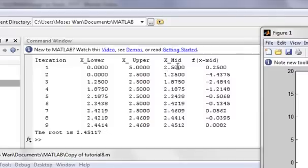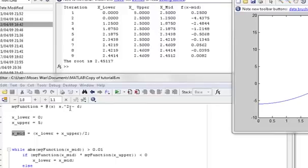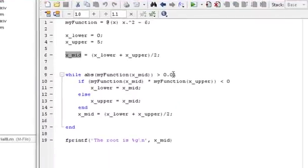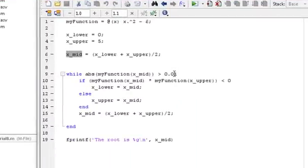We've put in 2.5 into the original function. And, it turns out to be 0.25, which isn't what we want here, because it's not close enough to 0. So, we're going to run through this loop again.